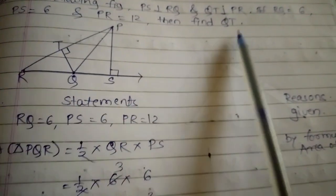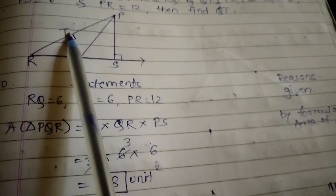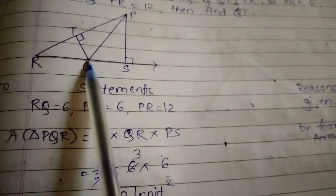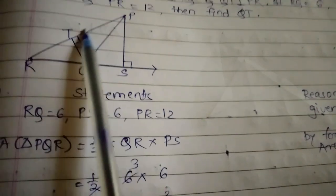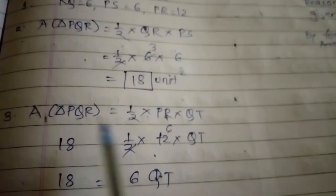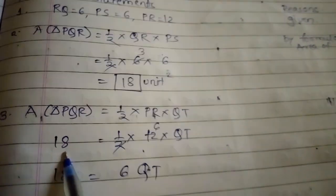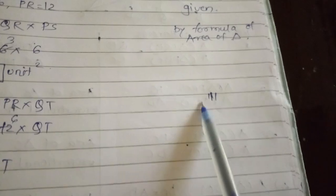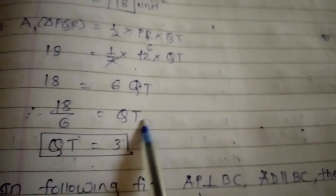To find QT, we again use triangle PQR but now take PR as base and QT as height. Area of triangle PQR equals half into PR into QT. Since we already know the area is 18, we get 18 = half into 12 into QT, so 18 = 6 × QT, giving QT = 3 centimeters.